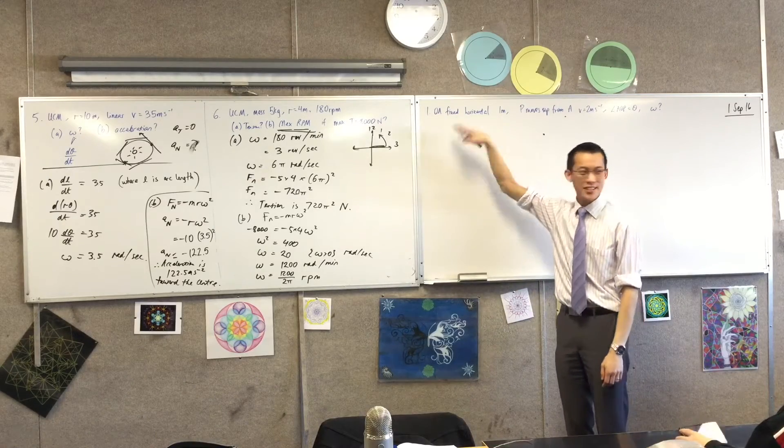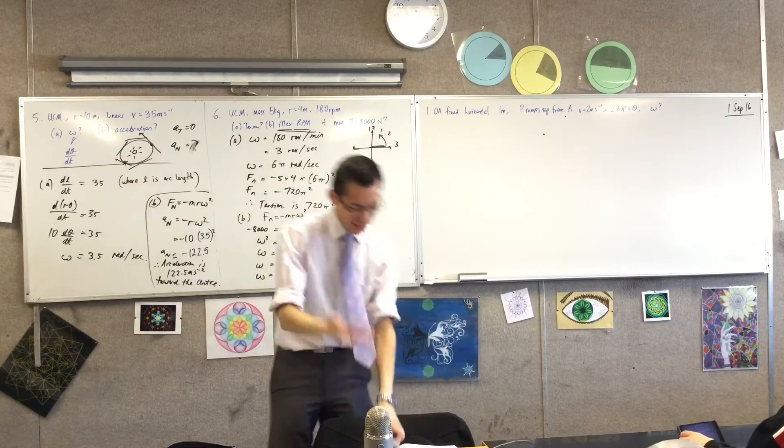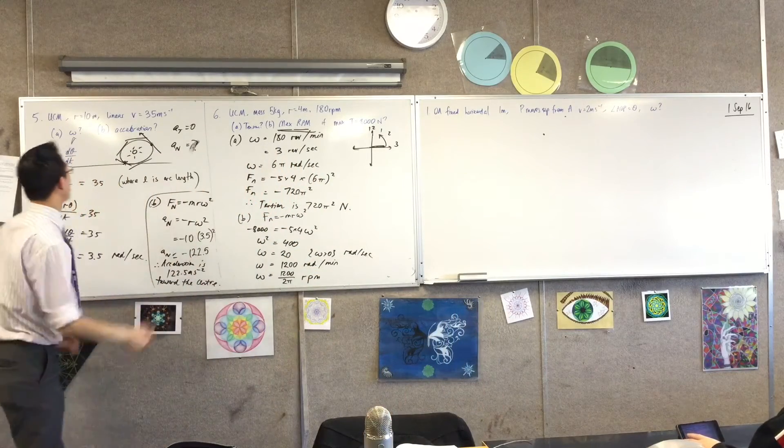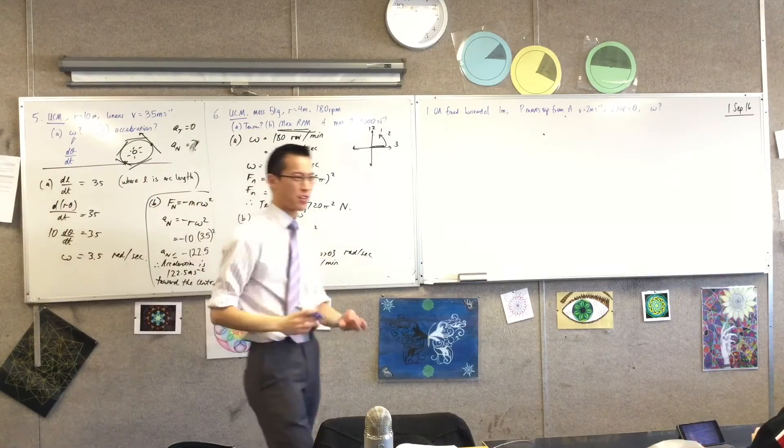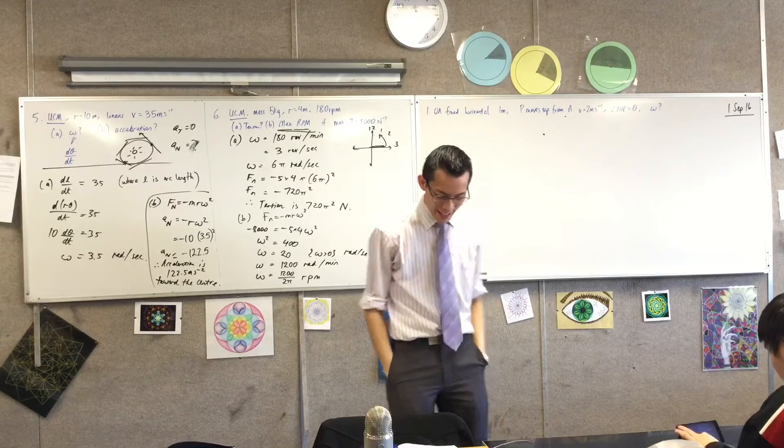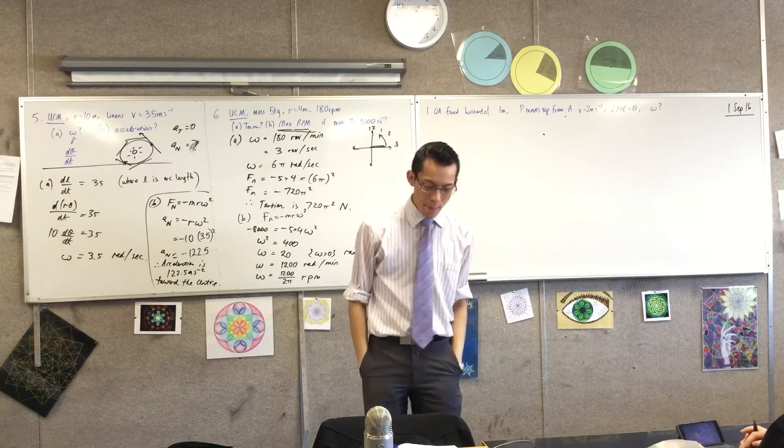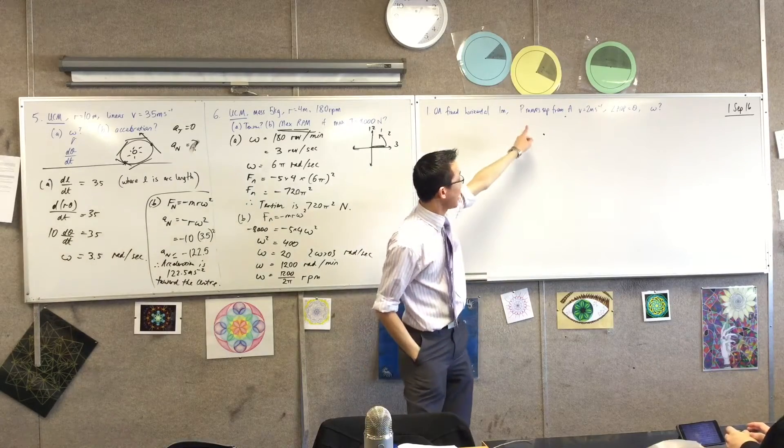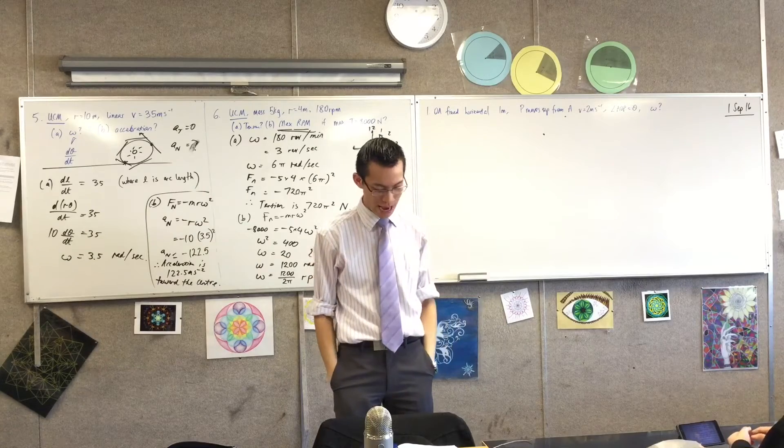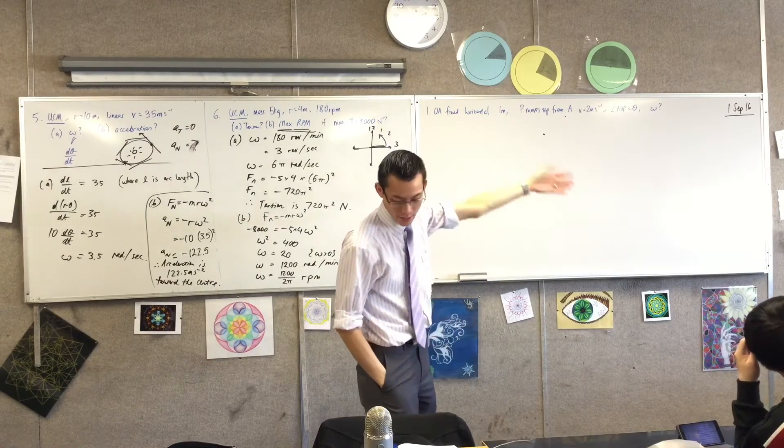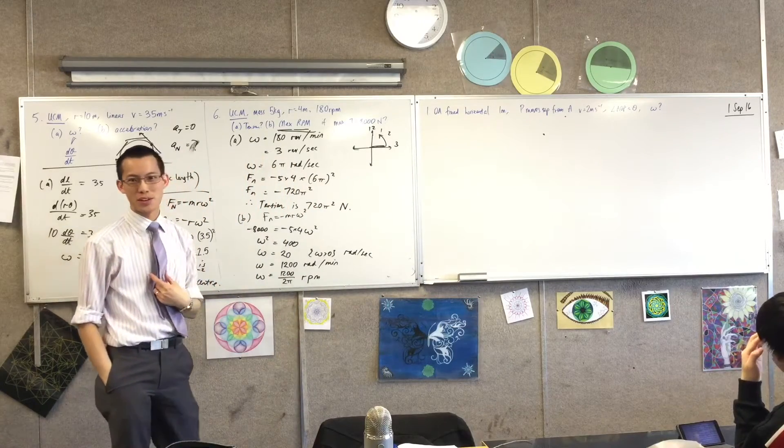Question 1. I left this to last because it's a bit sneaky because you're so in this mode of, for goodness sake, the exercise is called circular motion. Of course it's circular motion, right? Except if you scrutinize question 1 with me, it says, OA is a fixed horizontal interval of length 1 meter. Particle P moves upwards from A with that velocity in a direction perpendicular to OA. So tell me where they said the word circular in there.